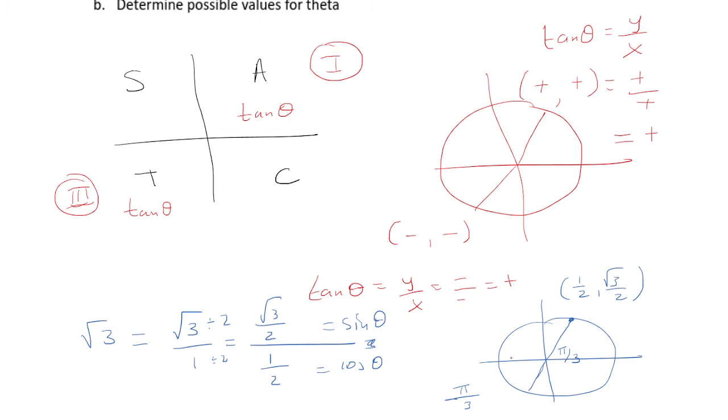We'll have the form 1 half comma root 3 over 2. But the only difference will be the sine. In this case, it's going to be negative. So you need to find the angle that is the right form pi over 3, and that's going to be 4 pi over 3.